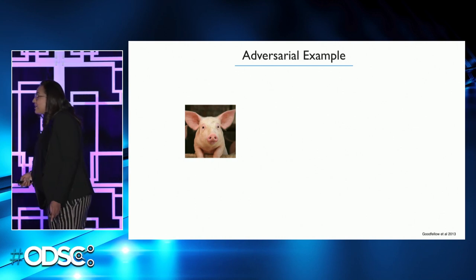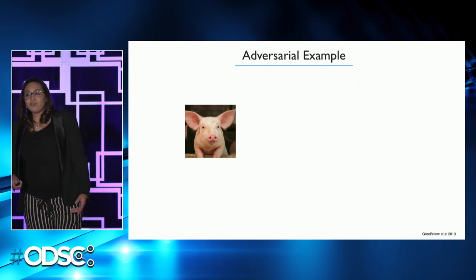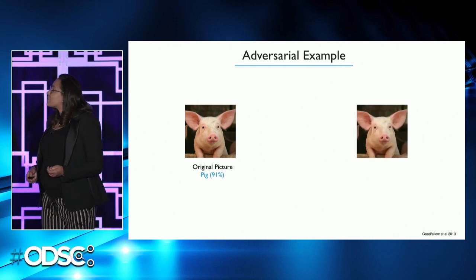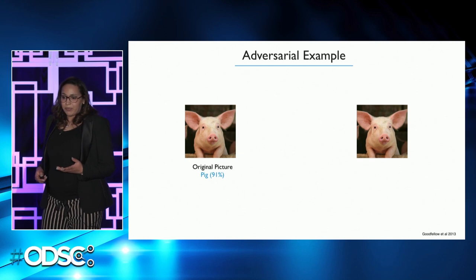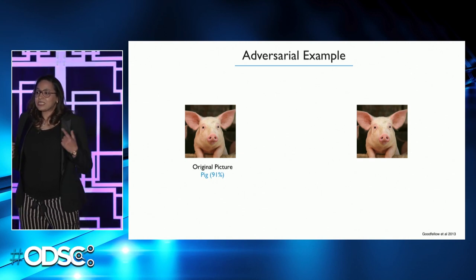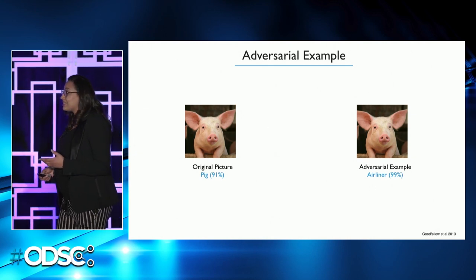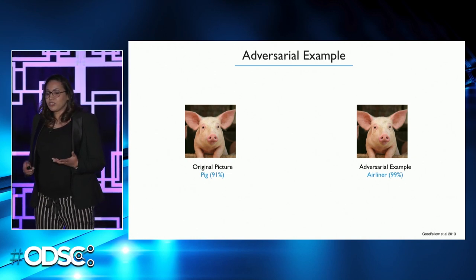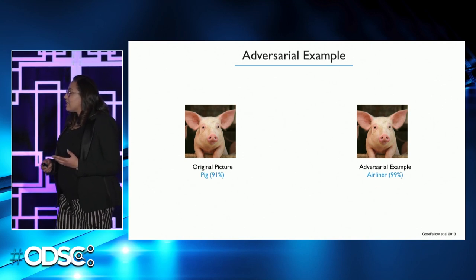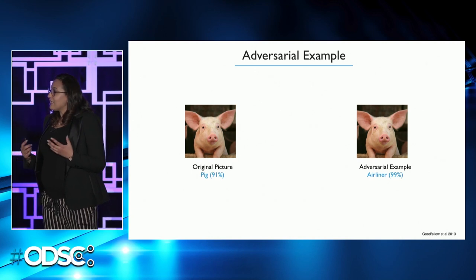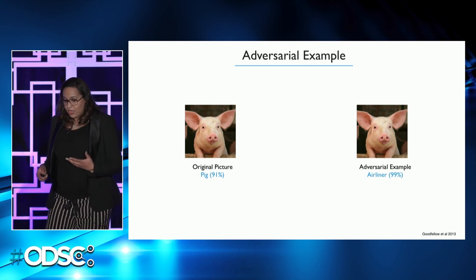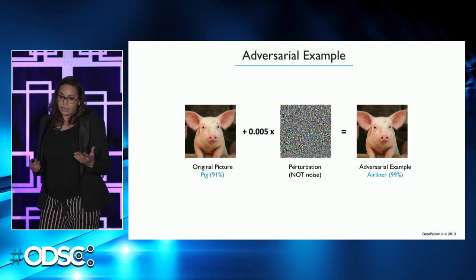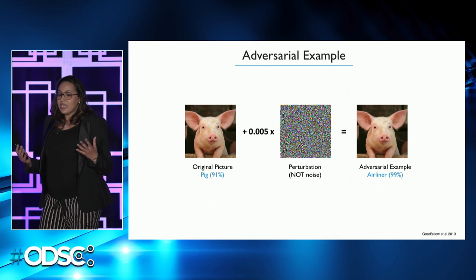What do you see here? I think we all see an image of a pig. And if we feed this image to a deep neural network, it agrees that this is a pig with 91%. How about this picture? We may agree that they are exactly the same. However, if I feed this image to the same deep neural network, it says that it's an airliner with 99%. This is the magic for machine learning effect. The original picture was manipulated in a way that fools the deep neural network, but it looks exactly the same to our vision system. This is what we call an adversarial example. A small perturbation was added to the original picture. This perturbation is not random noise, but it is very well crafted.